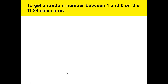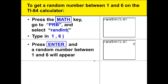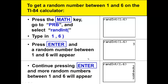Now we'll cover the steps on the calculator to get a random number between 1 and 6. Press the math key, go to probability, and select random integer. Type in 1 comma 6 and the close parentheses. Your screen will look like the one on the right. Press enter and a random number between 1 and 6 will appear. You will not necessarily get the 3 — it's a random number. Continuing to press enter will give you more random numbers between 1 and 6. Try it and see what you get.